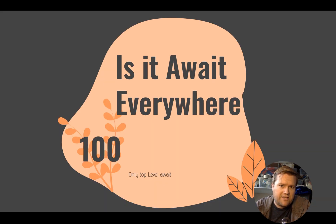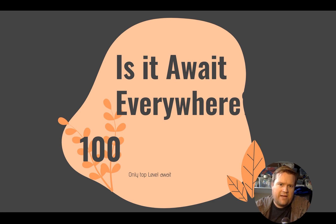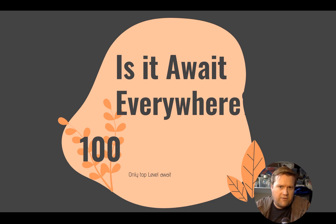There's another thing to keep in mind. I told you guys in the last video that you can await everywhere, but await works only at the top level. So if you have multiple functions, you still have to put the async keyword on your functions. It only works at the top level — if you have multiple levels, you still have to declare them as asynchronous.